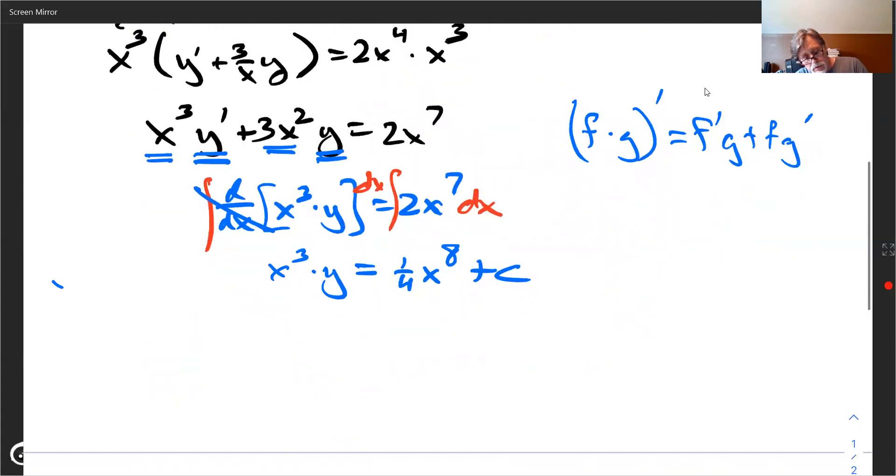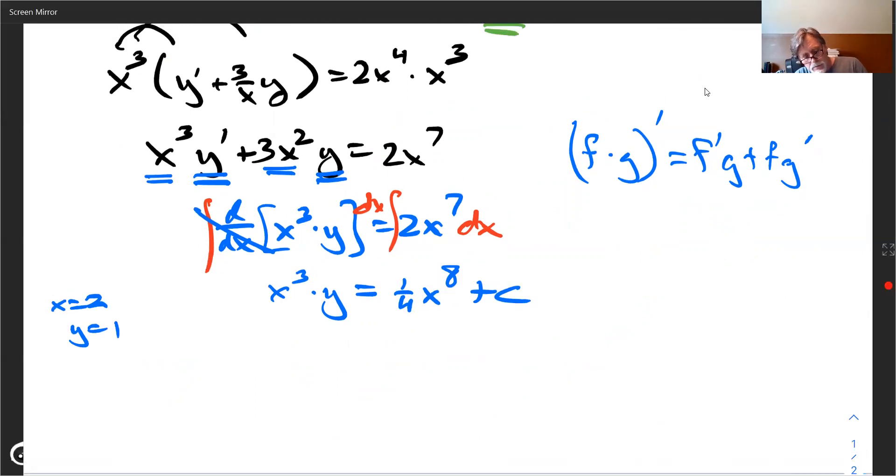So when x is equal to two, we're supposed to get y is equal to one on this problem. So we plug them in and figure out what c is. So when we do that, I get 2 times 2 times 2 is 8 times 1 is equal to one fourth. And then we've got 2 to the eighth power plus c.